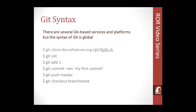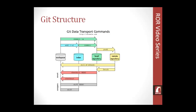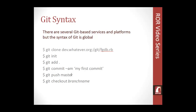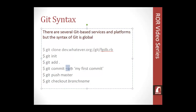'git add' puts everything into the staging area. You can specify a file name, or use a dot (period) to add the entire directory — all files and folders — at once. Once you've added everything to the staging area, you can commit it to the local repository. The commit brings us to the HEAD — the front of our local repository.